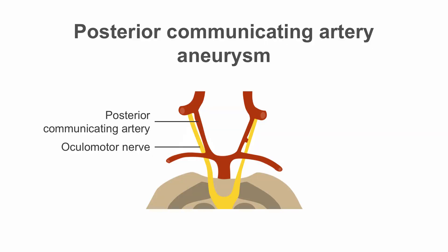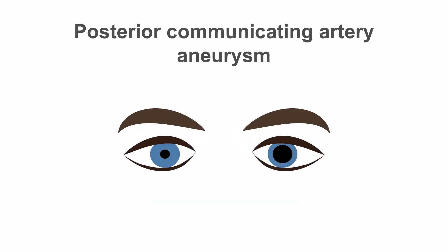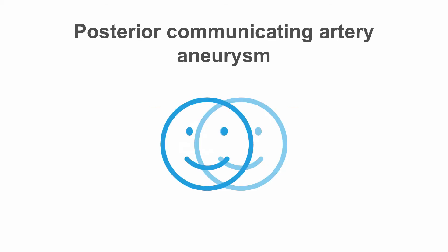The posterior communicating artery courses in close proximity to cranial nerve 3. The artery can develop an aneurysm at its intersection, which can compress the nerve. When this happens, the parasympathetic fibers on the surface are first affected, resulting in pupillary dilation on that side due to unrestricted sympathetic drive. If the aneurysm is large enough, some of the muscles activated by cranial nerve 3 may also be affected.